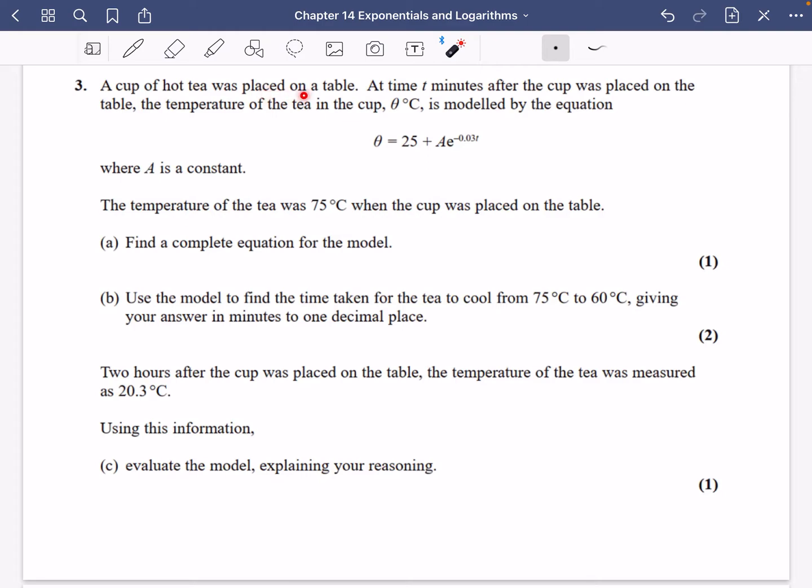It says a cup of hot tea was placed on a table. At time t minutes after the cup was placed on the table, the temperature in the cup, theta degrees centigrade, is modeled by this equation where A is a constant. Notice it's in minutes and degrees centigrade, and the temperature of the tea was 75°C when the cup was placed on the table. When it was placed on the table, the time is zero and the temperature was 75.